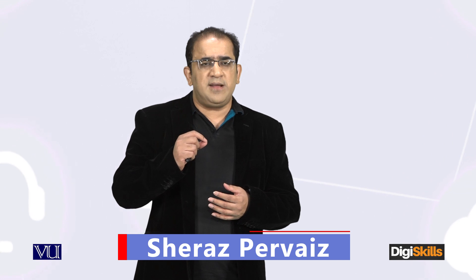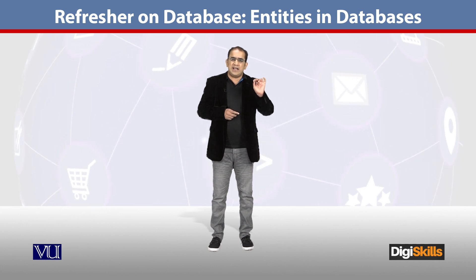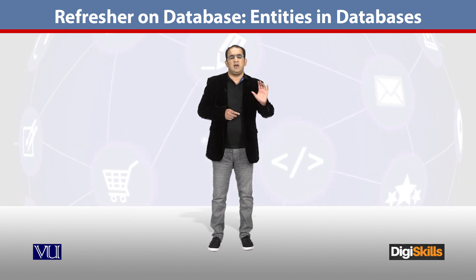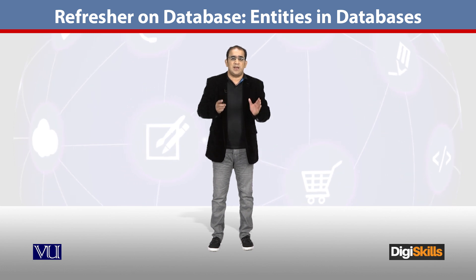The database's smallest storage unit is a column. For example, an ID — it is the smallest possible value. You can't break it down further. To qualify to be a valid column of a database table, it must be atomic.